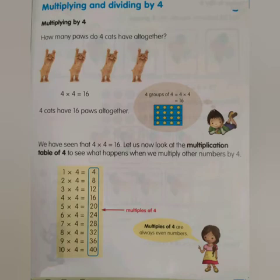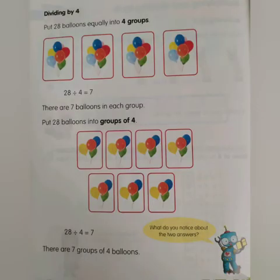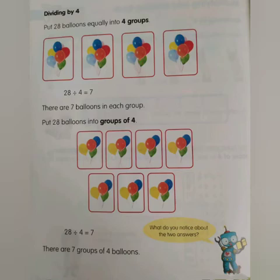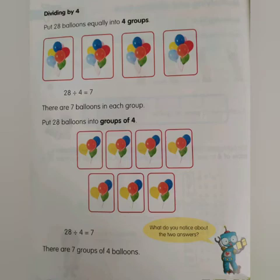Now we're going to divide by four. We have twenty-eight balloons to divide into four groups equally. Twenty-eight divided by four means each person gets seven balloons. We can also try it the other way: put twenty-eight balloons into groups of four — twenty-eight divided into groups of four still makes seven. What do you notice? The two answers are exactly the same — seven groups with four balloons, or seven balloons in each group of four.